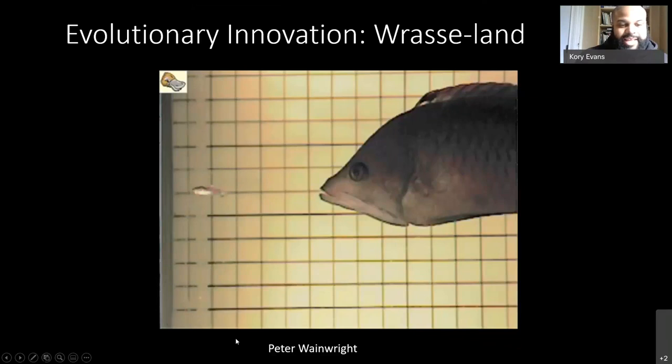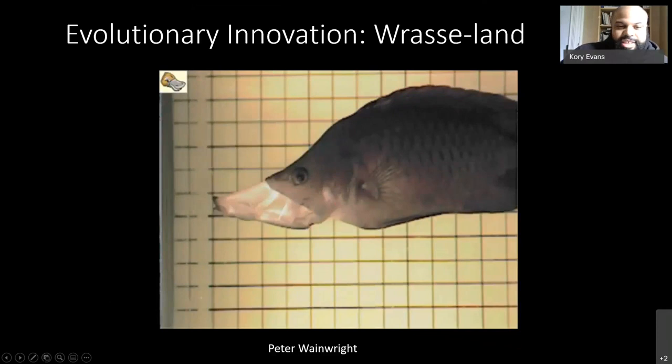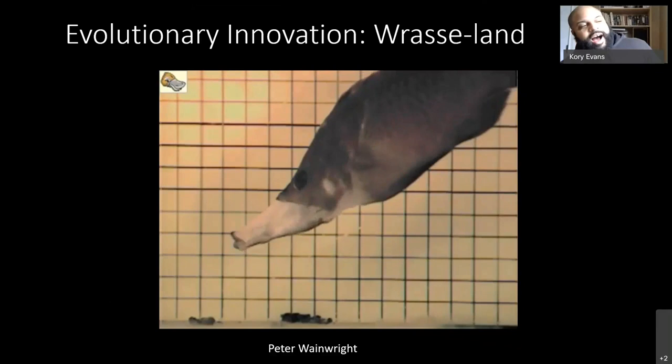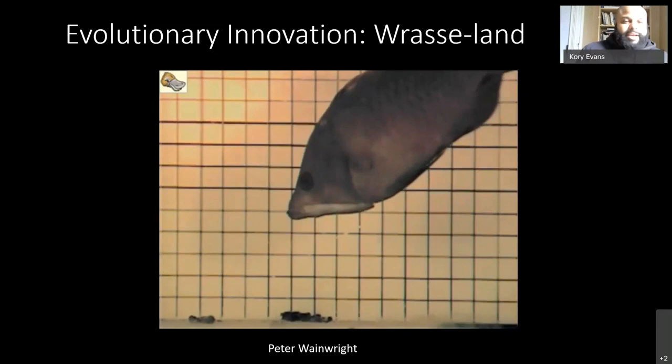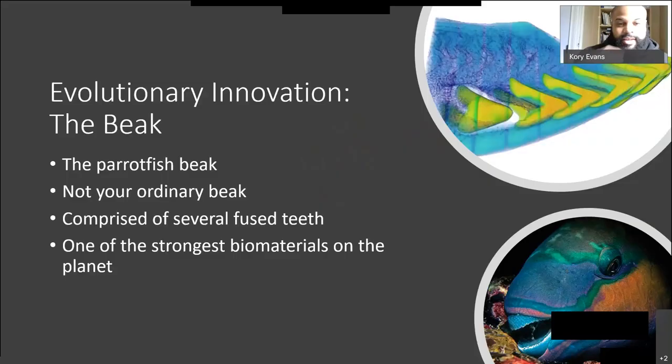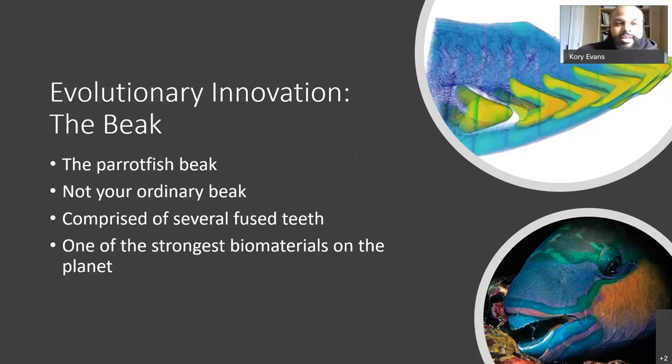Another really cool innovation in wrasses is what I call hyperprojection feeding. The slingjaw wrasse has the ability to extend its jaw more than one-third of its total body length to catch evasive prey. This is the equivalent of walking into your kitchen, seeing a hot Cheeto on the far counter, and launching your face at it and bringing it back without leaving the doorway. So fishes are doing things with their skulls that other vertebrates can't even dream of.